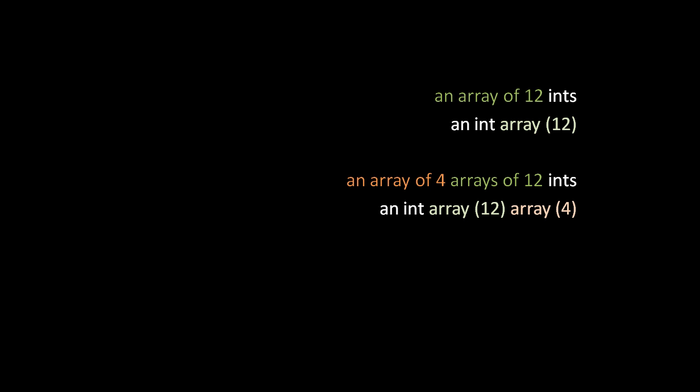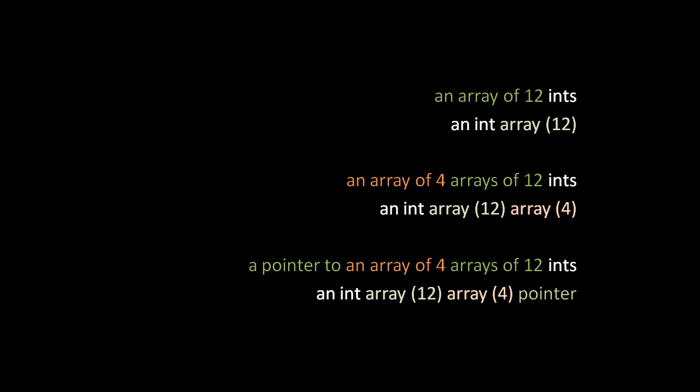One thing that makes these complex types very confusing is that C programmers often use the words pointer and array as modifying adjectives rather than as nouns, and this ends up reversing the order of the components when we state a type. For example, instead of saying "an array of 12 ints" we could say "an int array sized 12", or more commonly just "int array". Instead of saying "an array of four arrays of 12 ints" we commonly say "int array array", and instead of "a pointer to an array of four arrays of 12 ints" we say "int array array pointer". Because it's awkward to include array sizes this way, I find it less clear, even though it is less verbose.